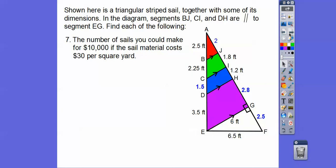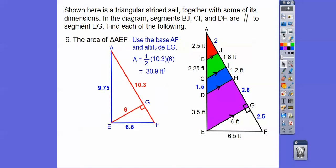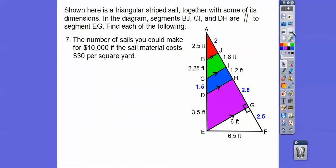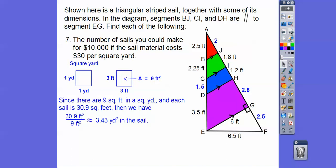So then the last part is the number of sails that you can make for $10,000 if the sail material costs $30 per square yard. Let's go back to this. This is how many square feet, but this is asking for square yards. So we have to convert square yards to square feet. A yard is 3 feet, so 3 feet by 3 feet is 9 square feet. And since there are 9 square feet in a square yard, each sail was 30.9 square feet.